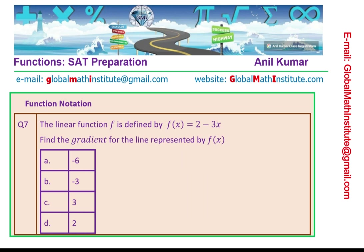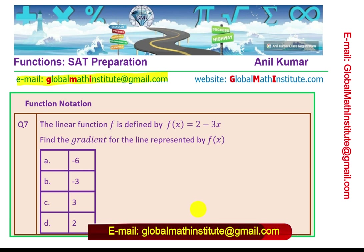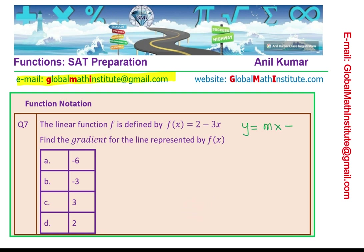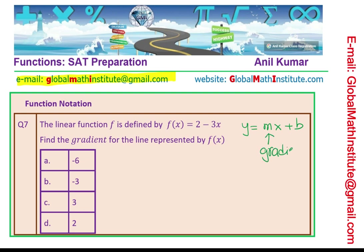Let's move on to question number 7. Feel free to write comments if you have any questions, and if you like and subscribe to my videos that would be great. A linear function f is defined by f of x equals 2 minus 3x. Find the gradient for the line represented by f of x. Gradient is the slope. Writing the function in the form y equals mx plus b, m is the gradient. Rearranging: f of x equals minus 3x plus 2, so the gradient m is minus 3.